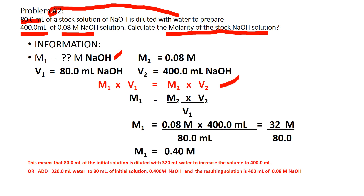The initial volume V1 is 80 mL. Using the equation, M1 is the unknown, so substitute: 0.08 molar times 400 mL divided by 80 mL. Cancel milliliters; 0.08 times 400 is 32, divided by 80.